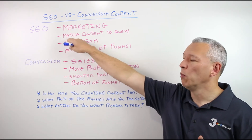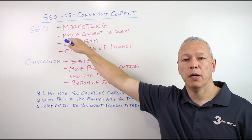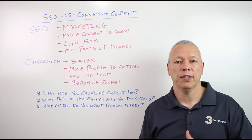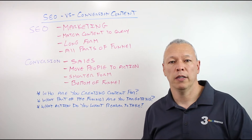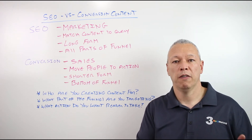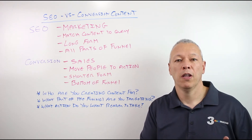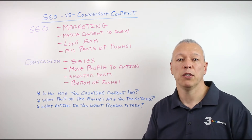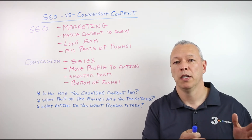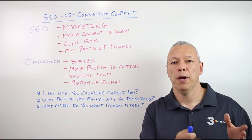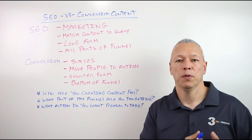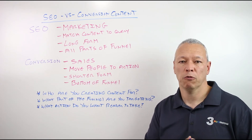We want to match the content with the query. So if somebody is typing in 'the best grass seed to use for lawns in Rhode Island,' then that will literally be the title of the article and the content to match it. Because if somebody types it in, we want that web page on our website to show up at the top of Google, get clicked on, and have people come to the website to read the article.